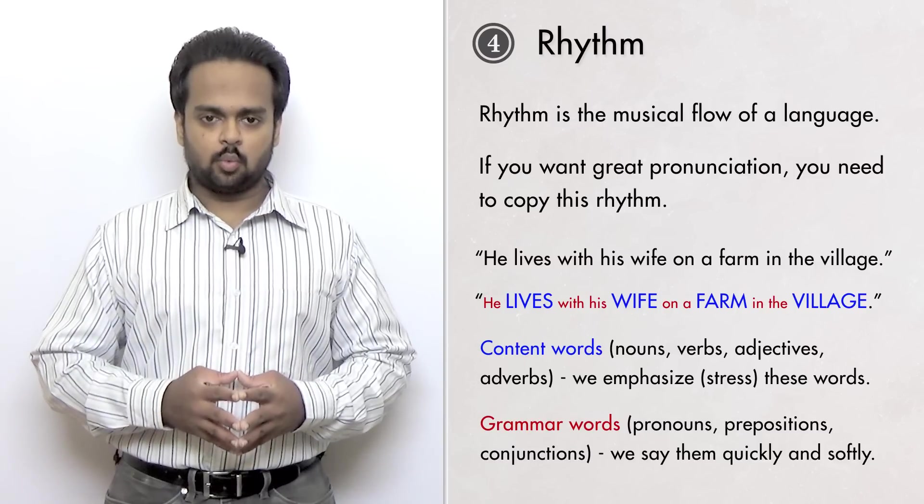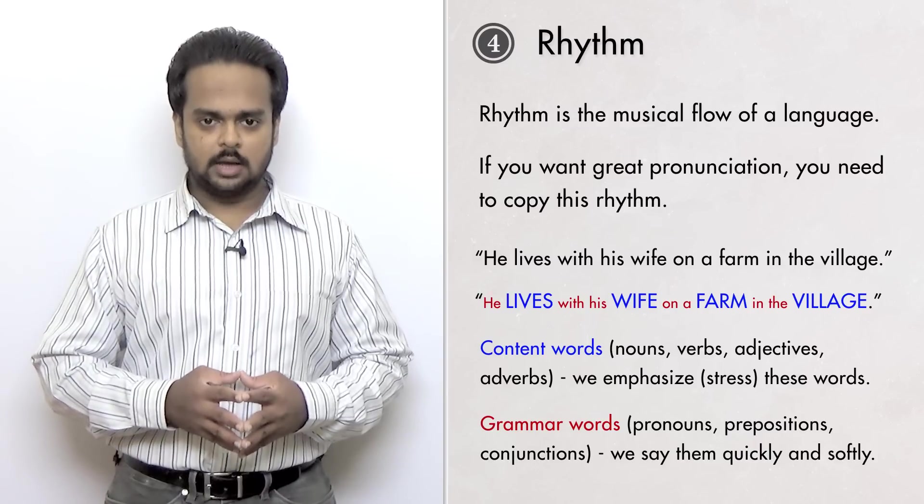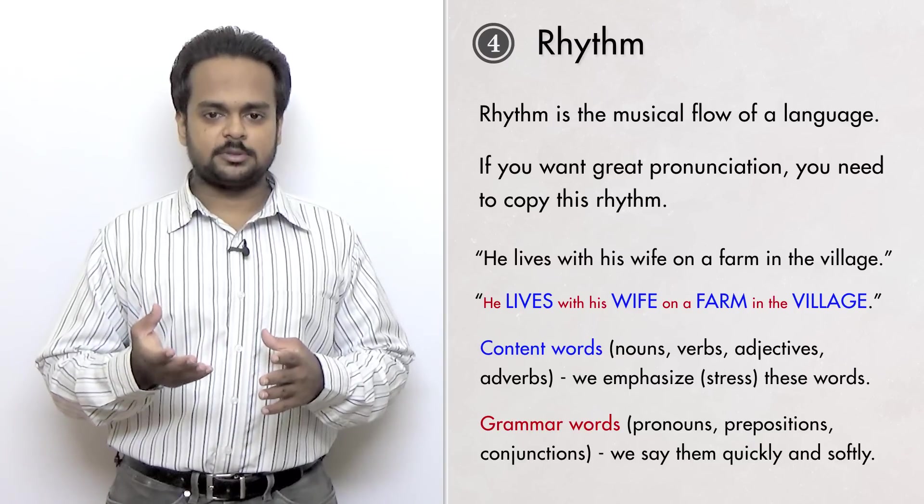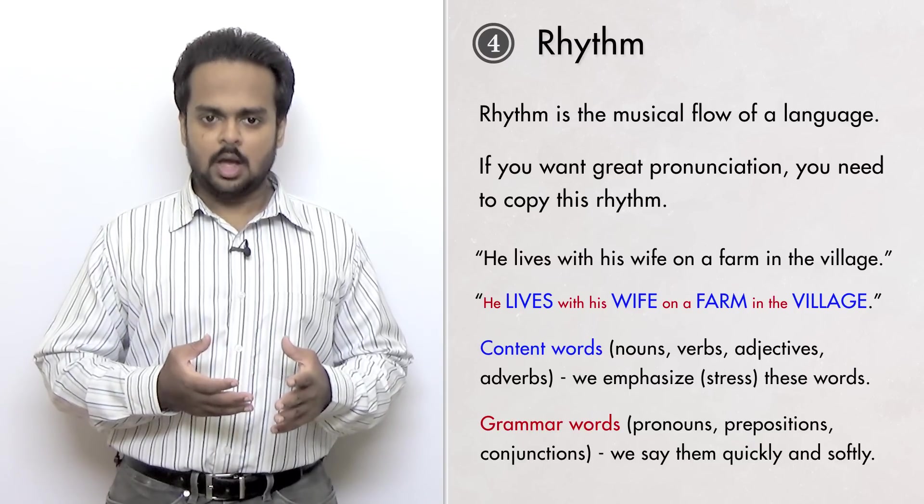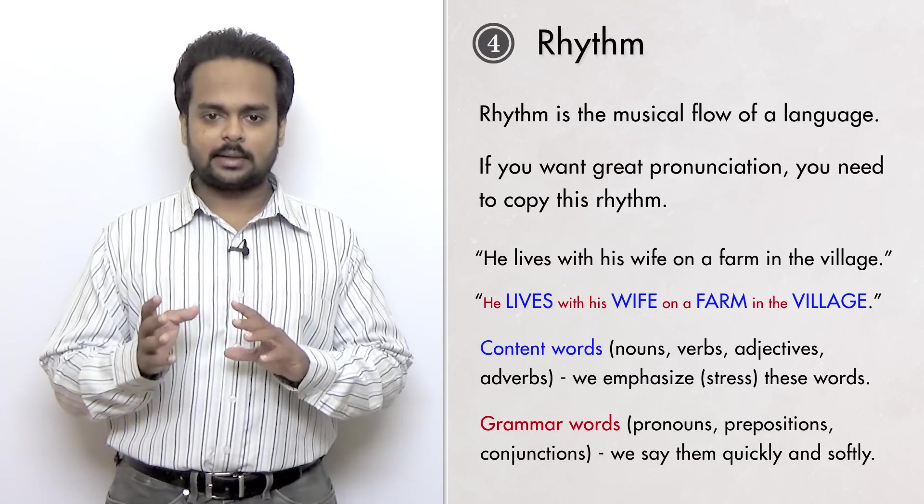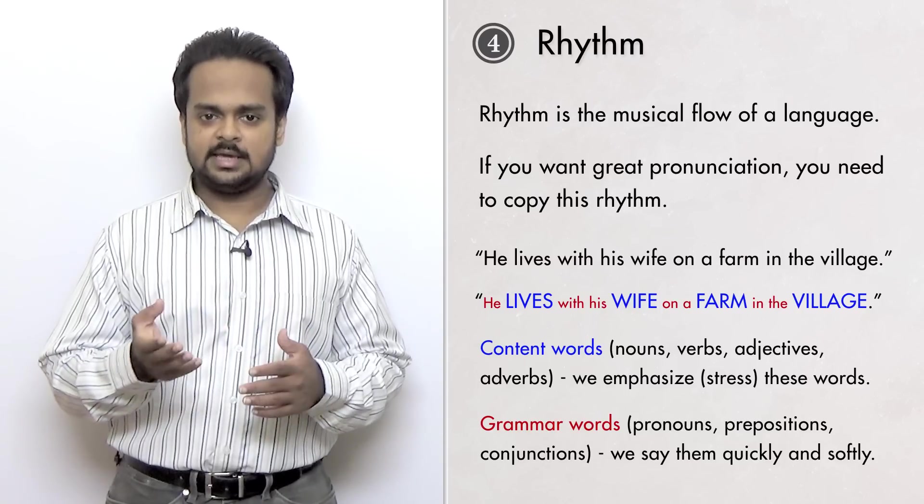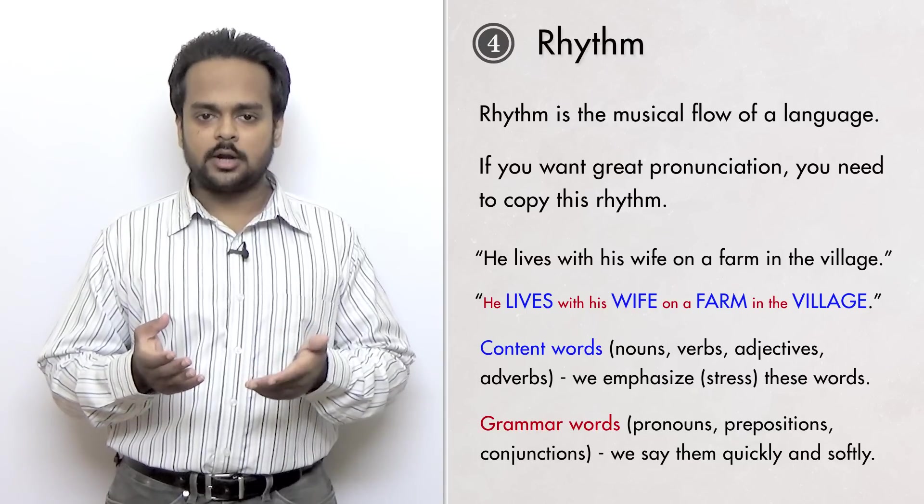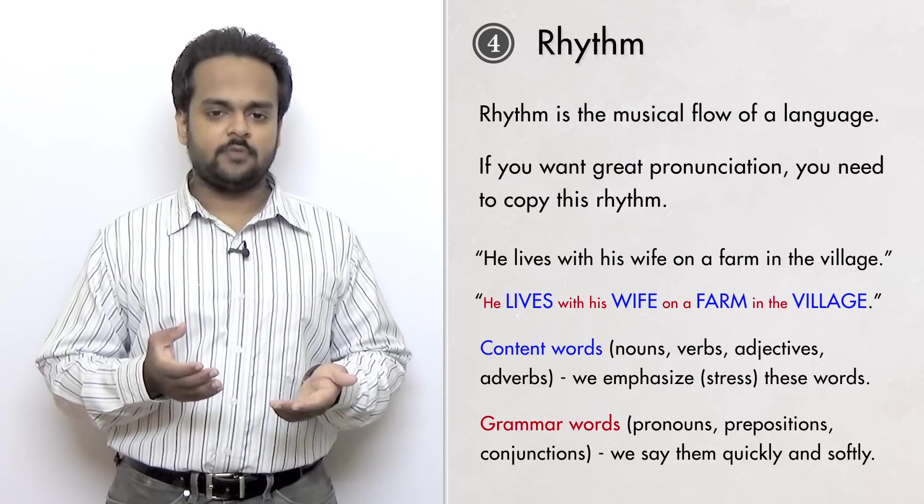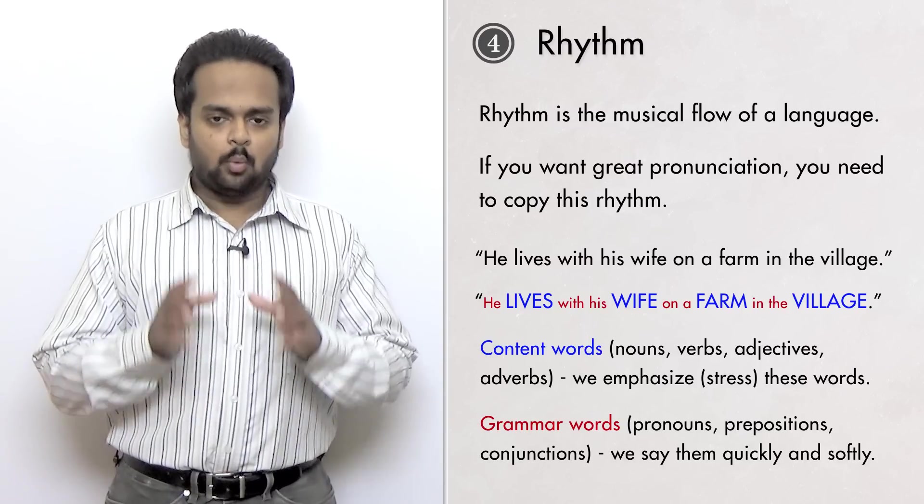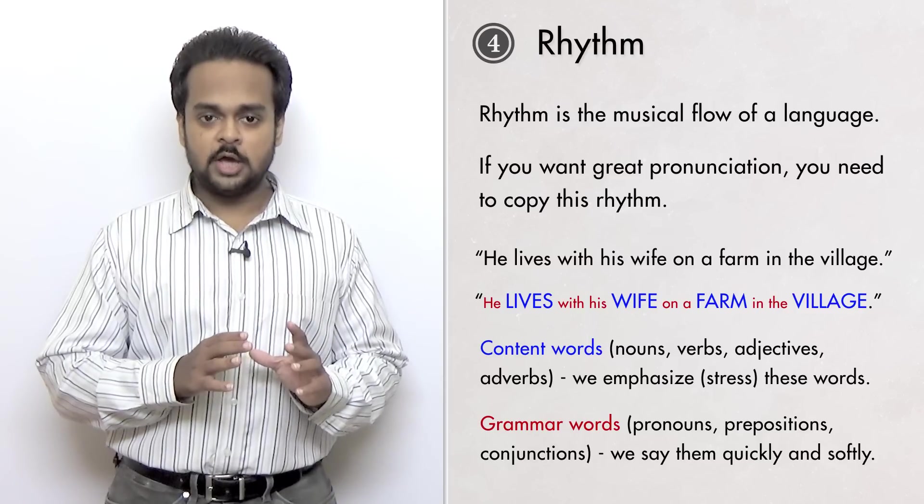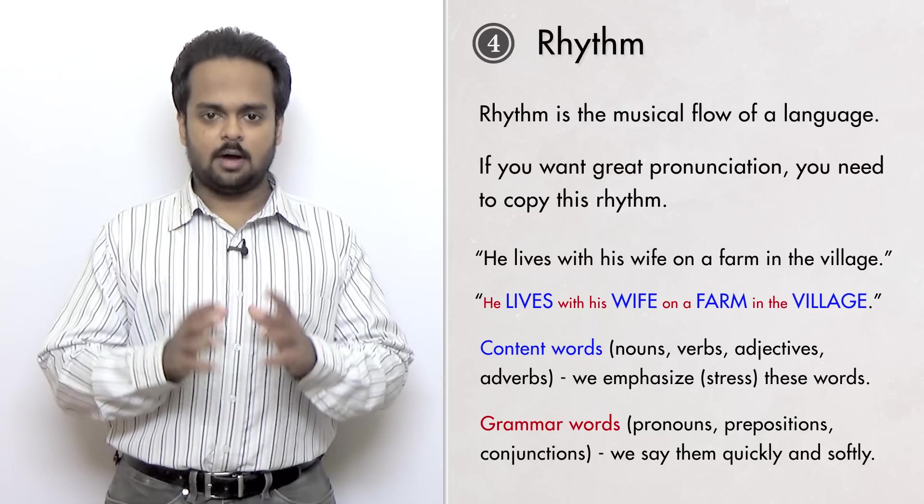All the other words are grammar words. That is, they just give grammatical information – pronouns, prepositions, and conjunctions. We don't stress these words. Instead, we say them quickly and softly. He lives with his wife on a farm in the village. When you stress the content words and unstress the grammar words, you produce the correct rhythm of English.